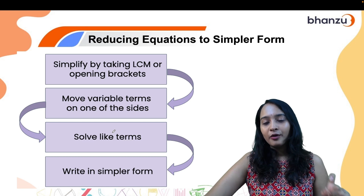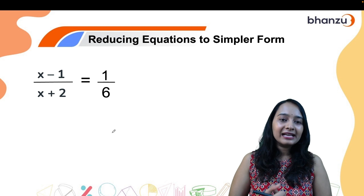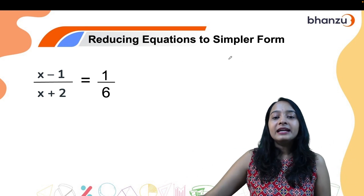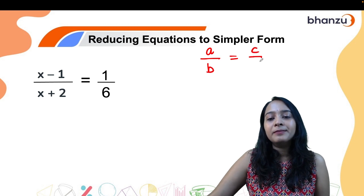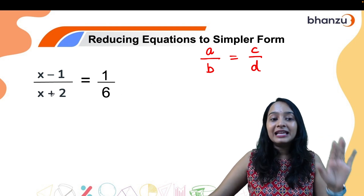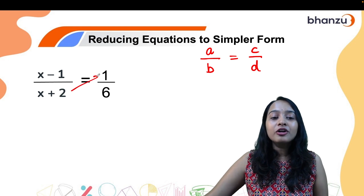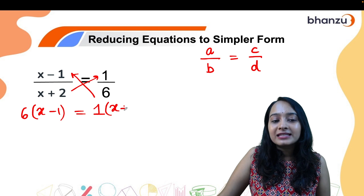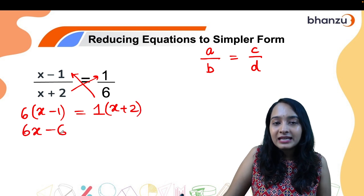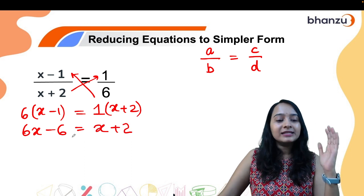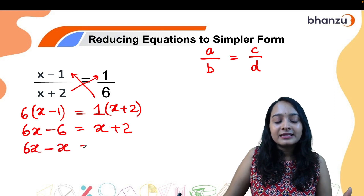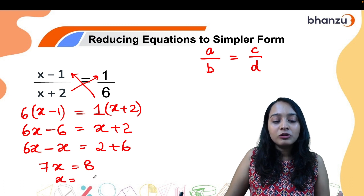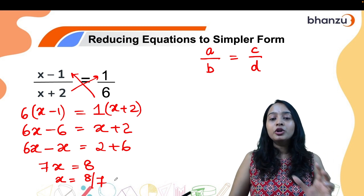Let's take the equation: (x minus 1) by (x plus 2) equals 1 by 6. There are no operators on either side — it is simply of the form a by b equals c by d. Since there is a variable in the denominator, we cannot keep it there, so we cross multiply: 6 multiplied with (x minus 1) equals 1 multiplied with (x plus 2), giving 6x minus 6 equals x plus 2. Bringing variables to one side: 6x minus x equals 2 plus 6, so 7x equals 8, and x equals 8 by 7.